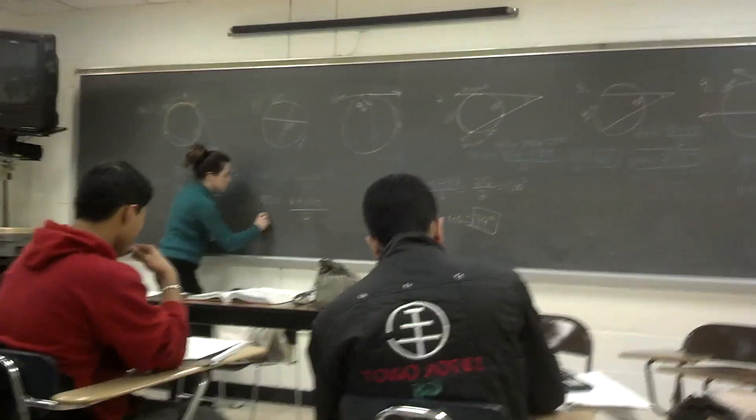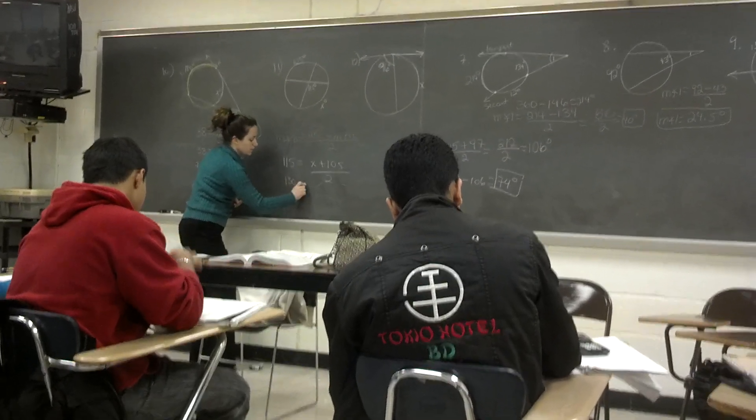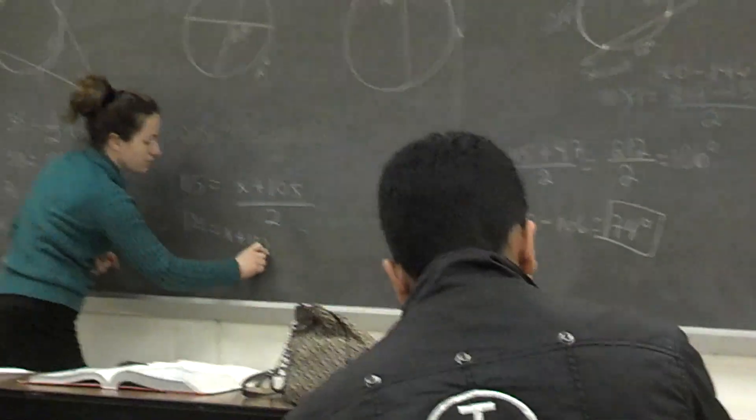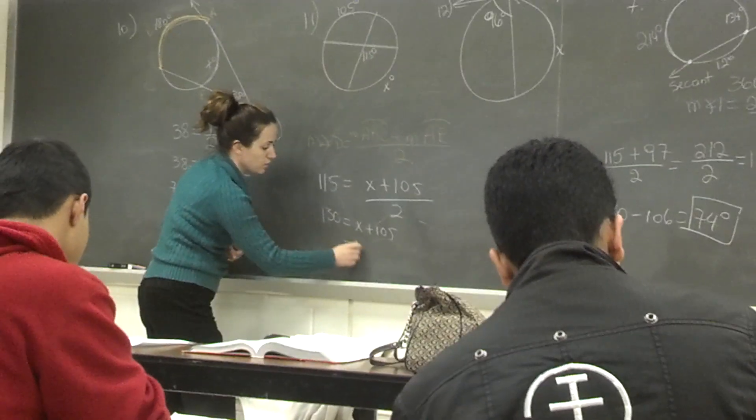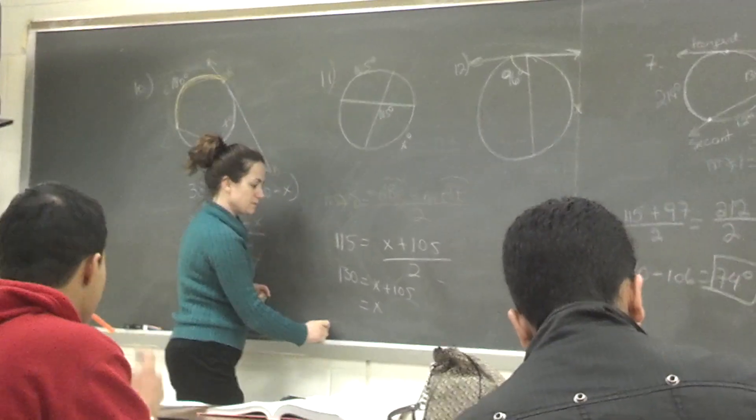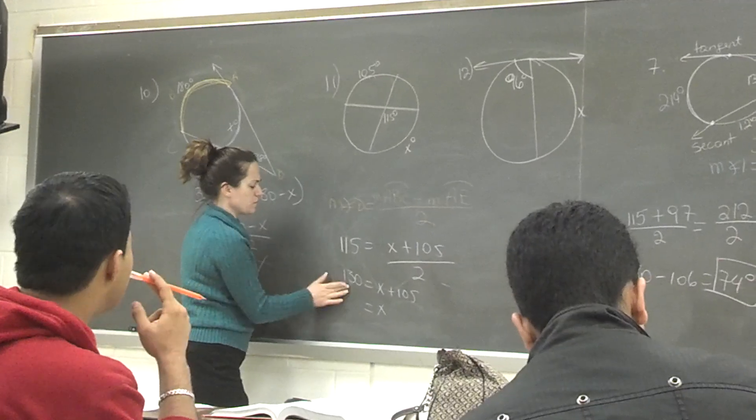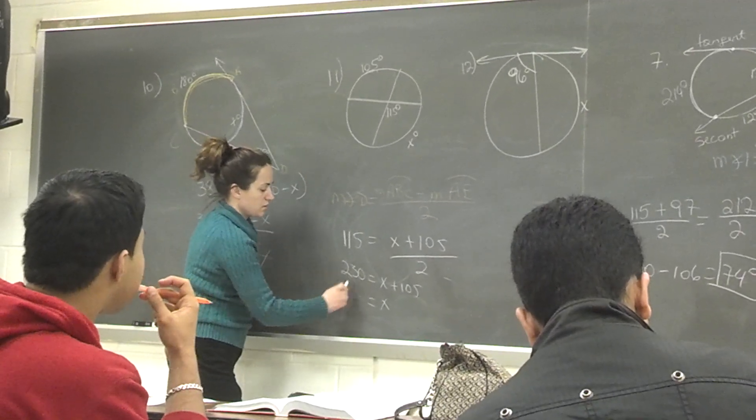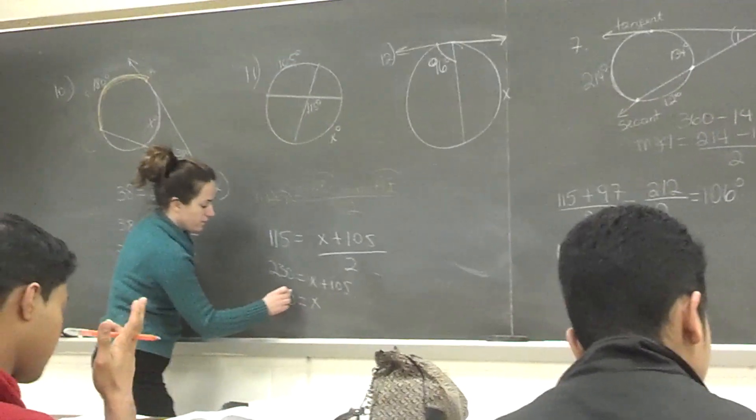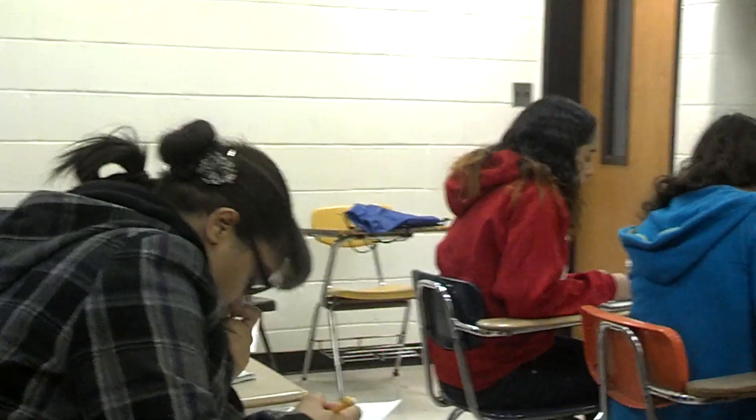So this right here should be 130 equals x plus 105, subtract 105, what is it? Subtract 105, that's 5, 2, 125, right?